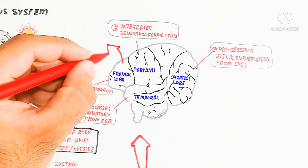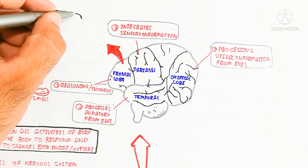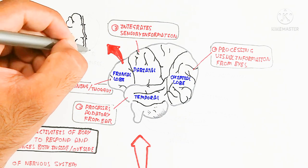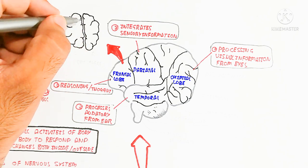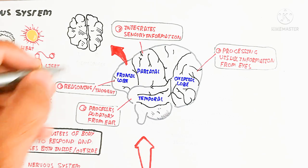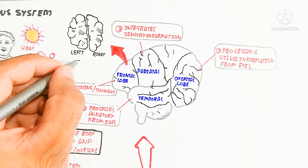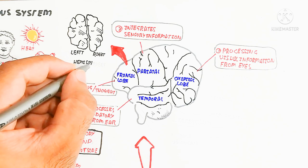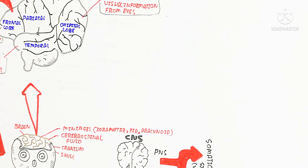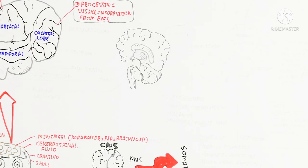Inside the brain, the upper and larger part is known as the cerebrum. The cerebrum contains a left hemisphere and a right hemisphere. The left hemisphere controls the right part of the body, while the right hemisphere controls the left part of the body. Together they control our movement and body collectively.